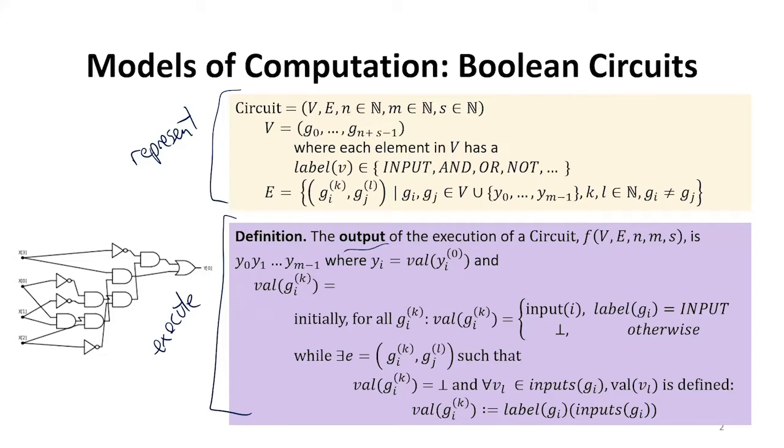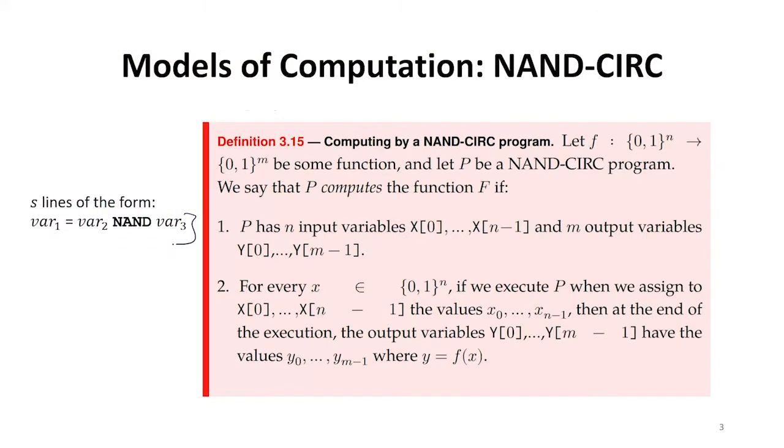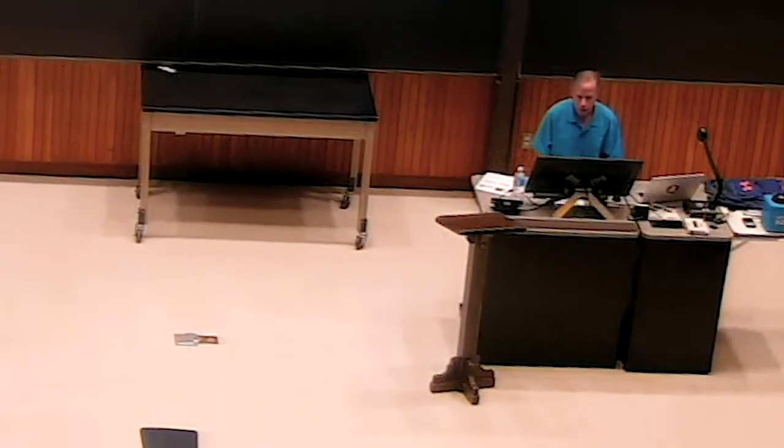We've seen that for the NAND-CIRC language. Here our representation is really simple. It's lines of this form. Our computing model tells us how to take a NAND-CIRC program, evaluate it, and get an output. Each function we can define with NAND-CIRC or Boolean circuit model is finite. It works for a finite number of inputs, so we could always just do a lookup table. But it's still interesting to look at what circuits can do more compactly.